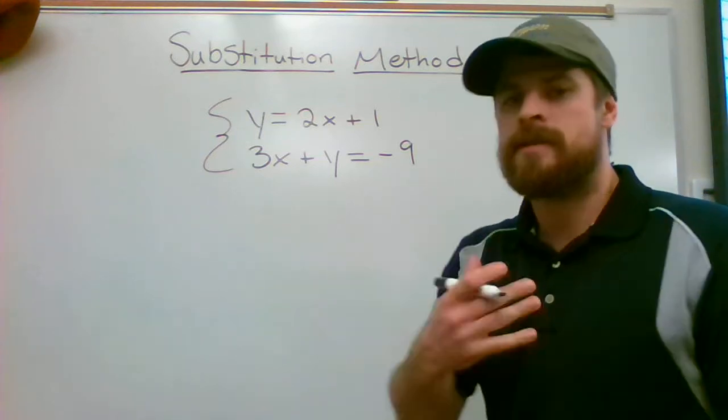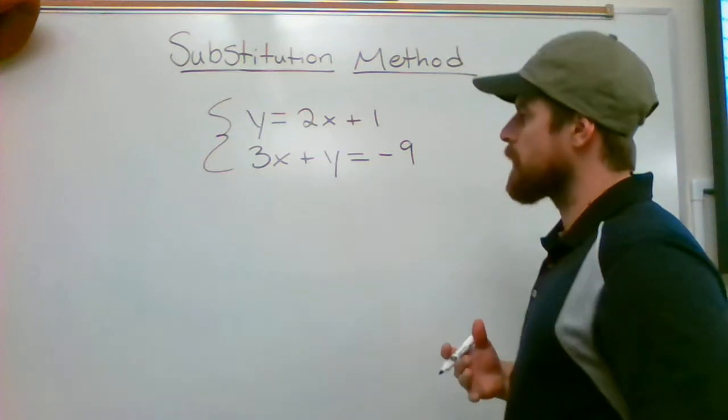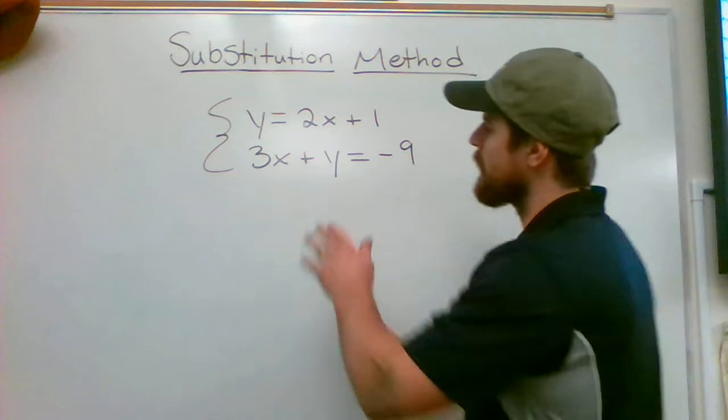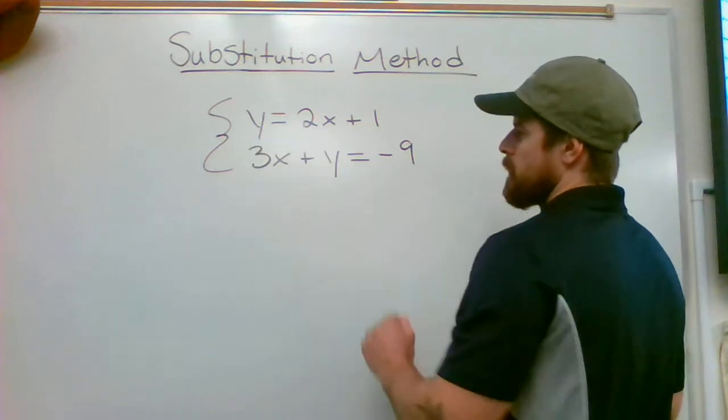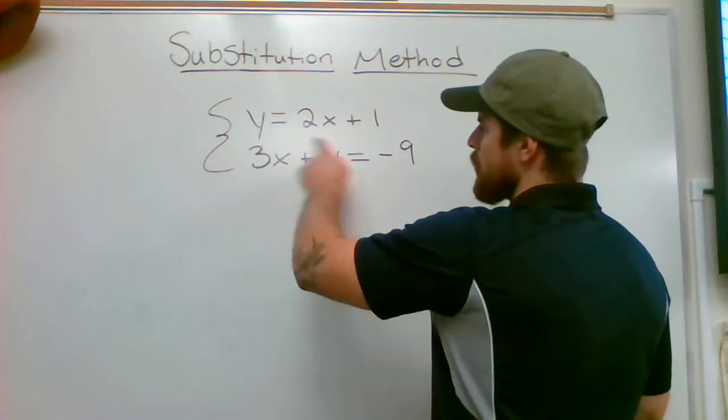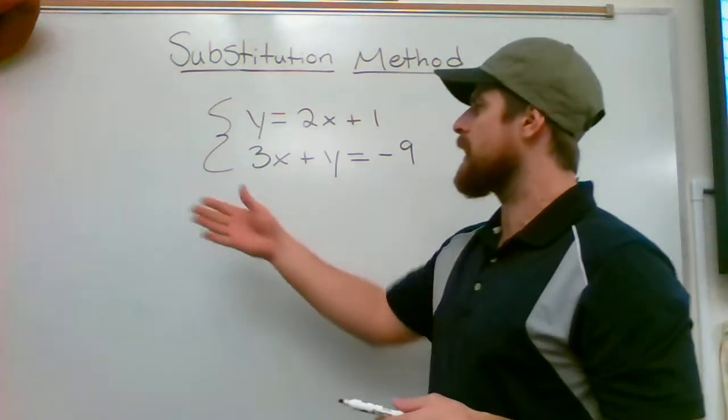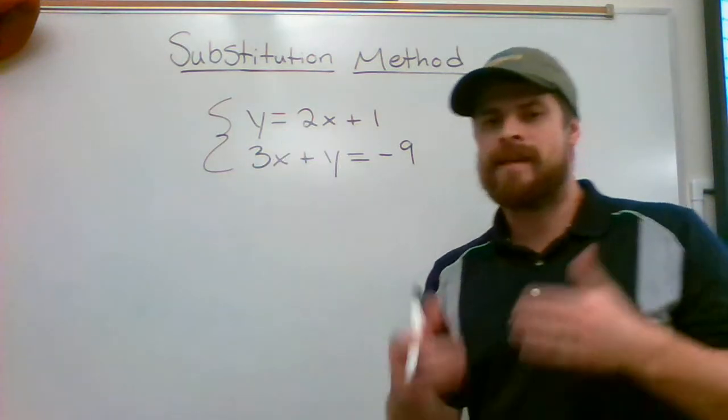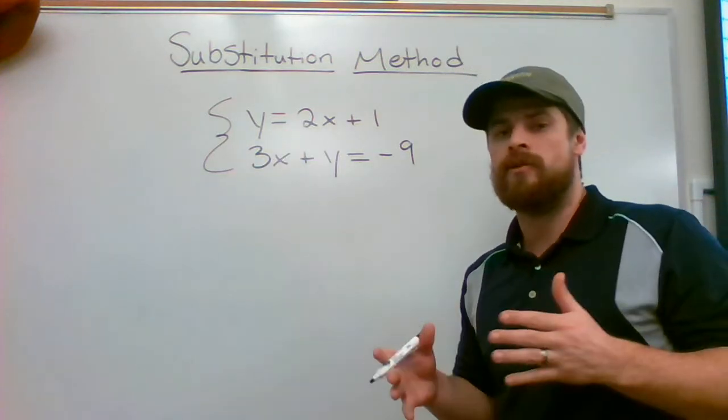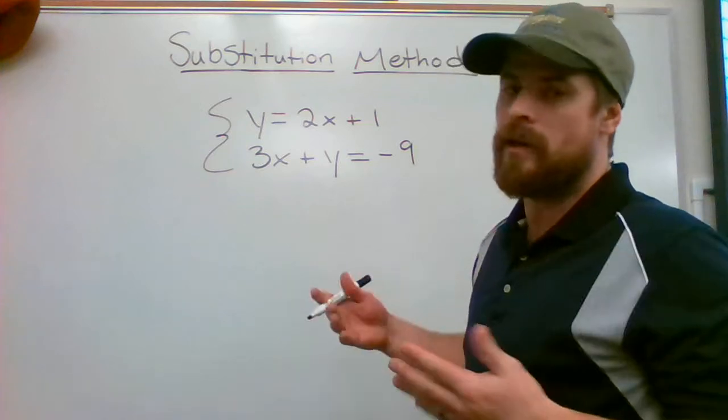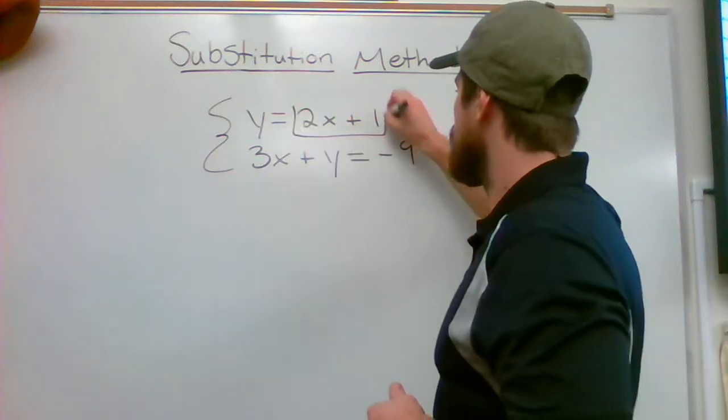I personally like to call it the sticker method. The reason I call it the sticker method is because what you're trying to do is get a variable all alone. Like you see here in the first equation, we have y being the only thing on the left side of our equation. That is a good thing. We do not have to do a first step. We are ready to go. We have what I like to call a sticker.